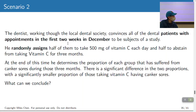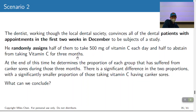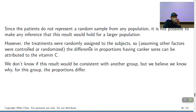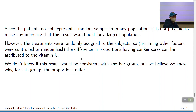If instead we randomly assigned patients — some required to take vitamin C and some required to abstain — and we find a difference, again it's not a random sample so we can't generalize to a larger population. But this time, because we randomly assigned treatments to subjects and assuming everything else is controlled for or randomized, the difference in the two proportions can be attributed to the vitamin C. At least for this group, we think we know why the results are different.